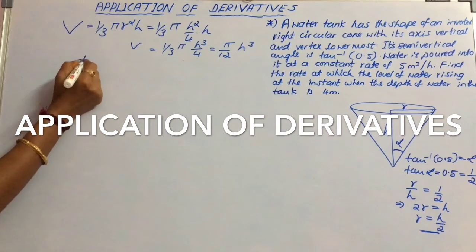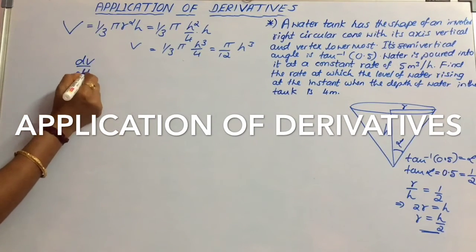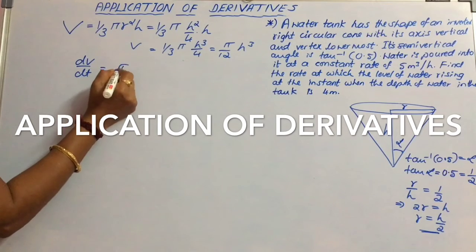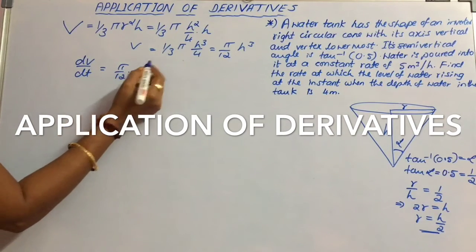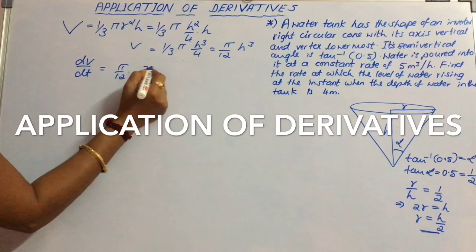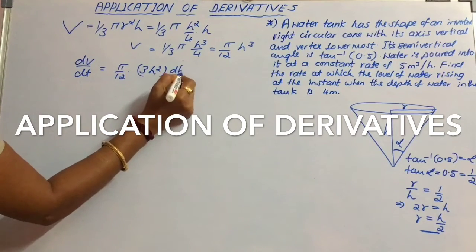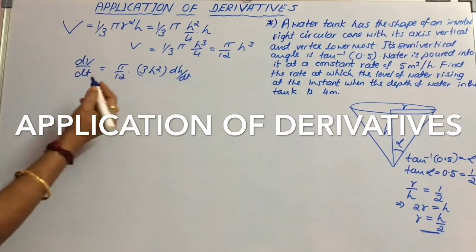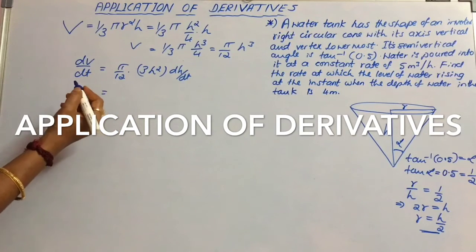If we differentiate this, dV by dt is equal to pi by 12 into derivative of h cubed is 3h squared into dh by dt. If we substitute the values,